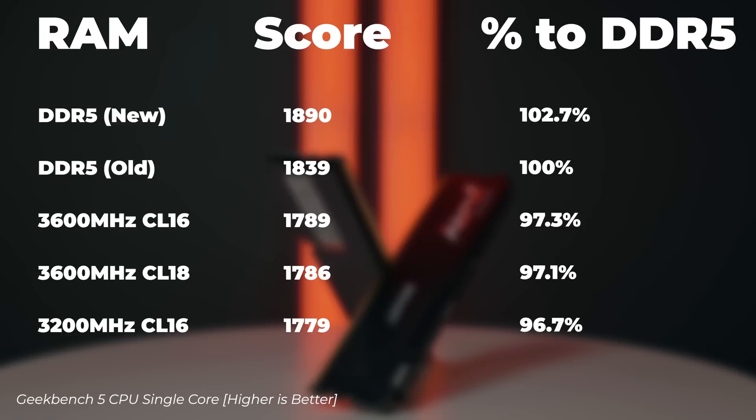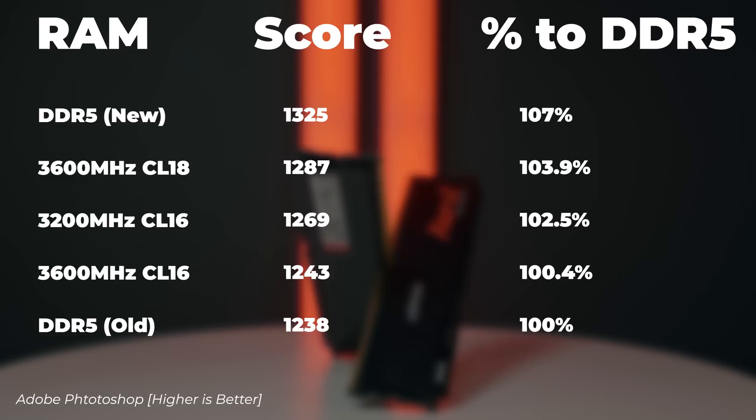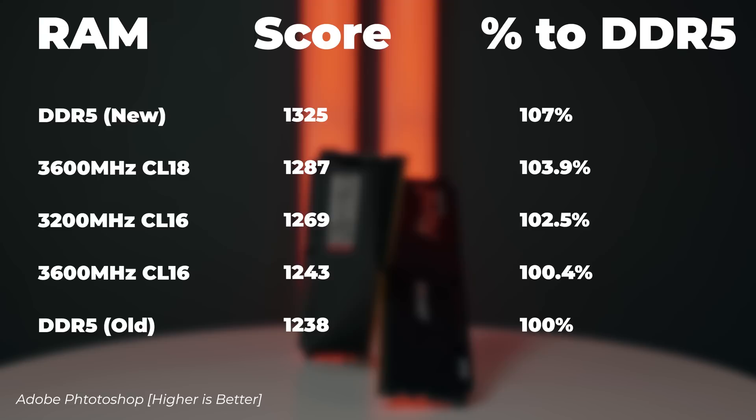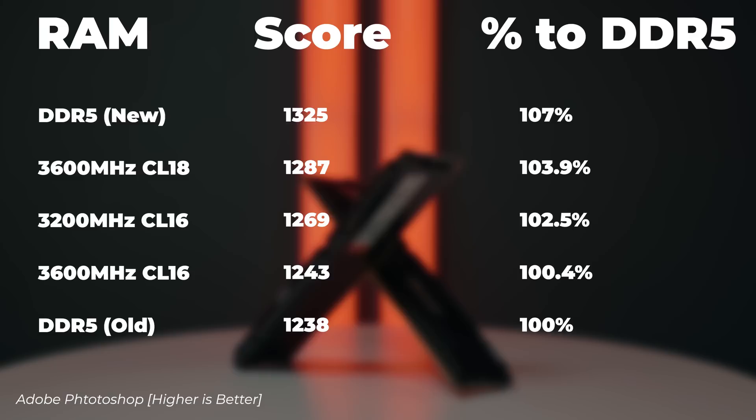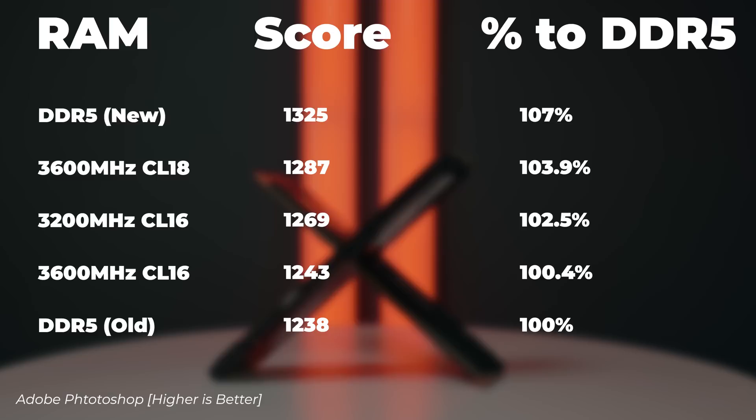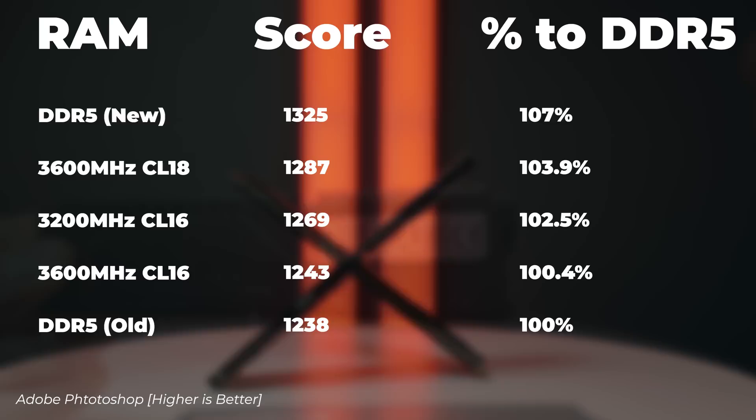Moving to Photoshop, the results are very interesting. The early DDR5 results are actually the lowest of the bunch. The 3600MHz CL16 is 0.4% faster; the 3200MHz CL16 cheapest RAM is 2.5% faster; the 3600MHz CL18 is 3.9% faster; and the latest DDR5 benchmark on Windows 11 is 7% faster. So DDR5 has made quite a big leap in photo editing performance.